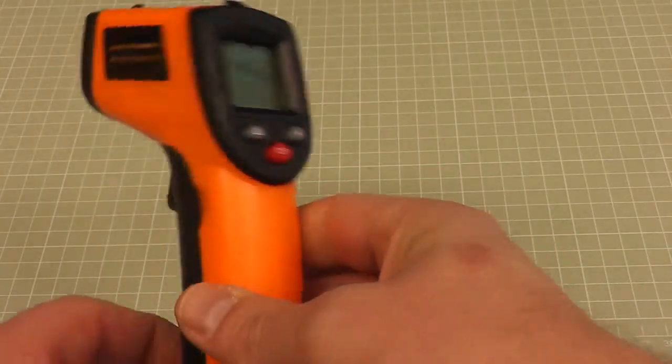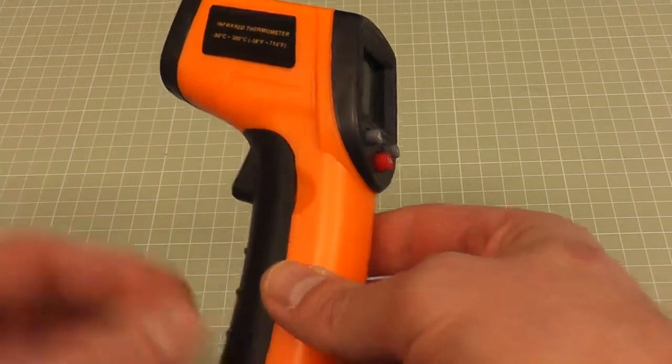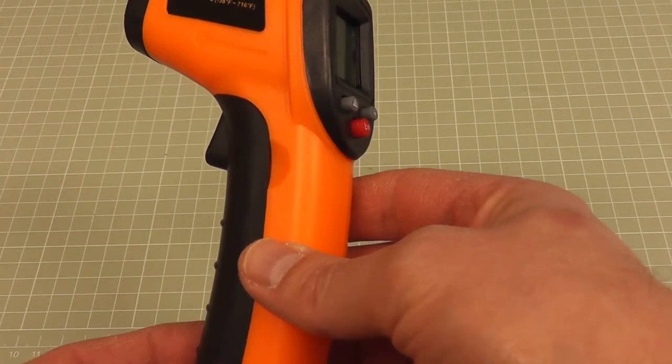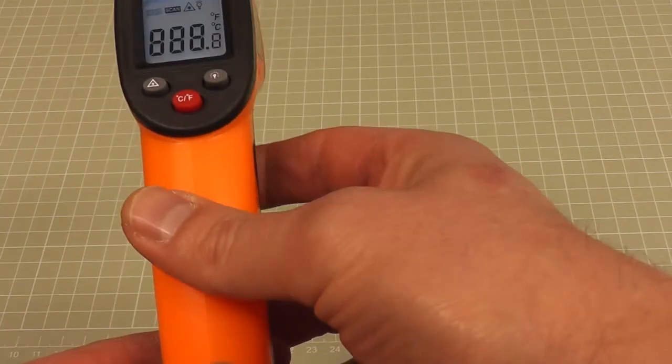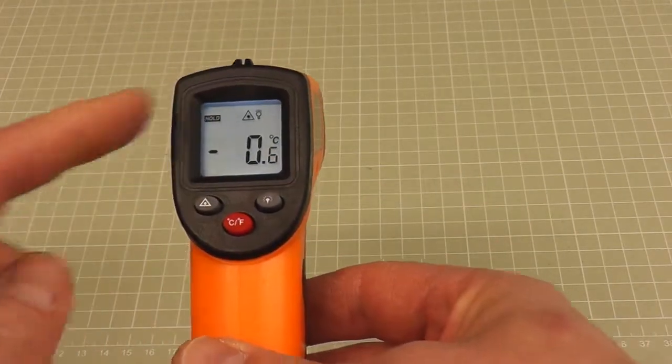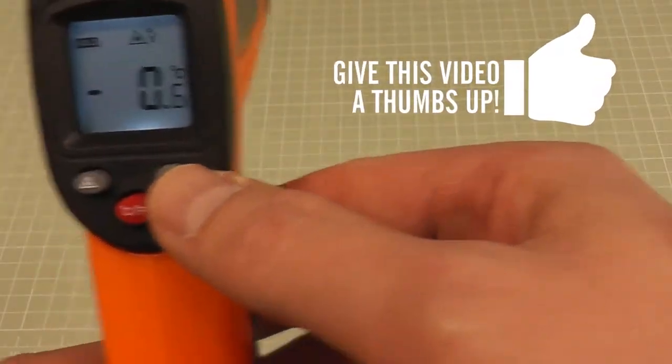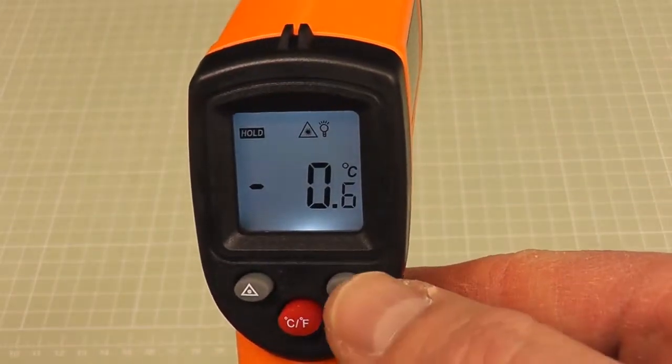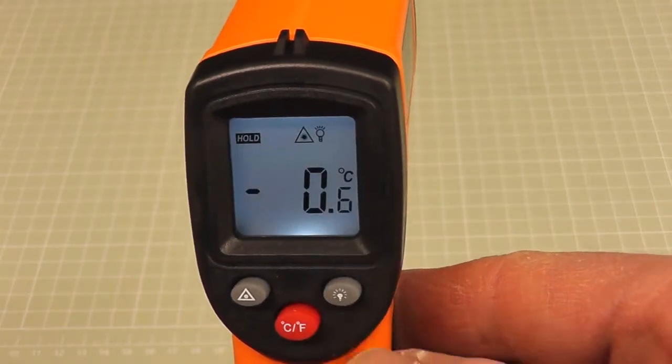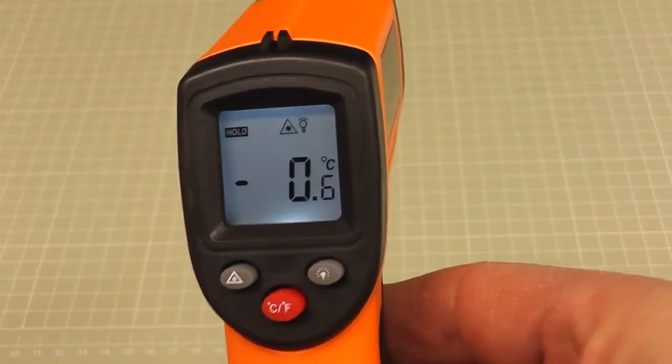Now there's no on-off switch with it. Basically, when you press the trigger, it turns on and immediately starts taking a temperature. So we'll just turn the device on. The screen is backlit, and you can turn that on and off with this button here. This button turns the backlight on and off, and you get an indication on the screen there with a little bulb.